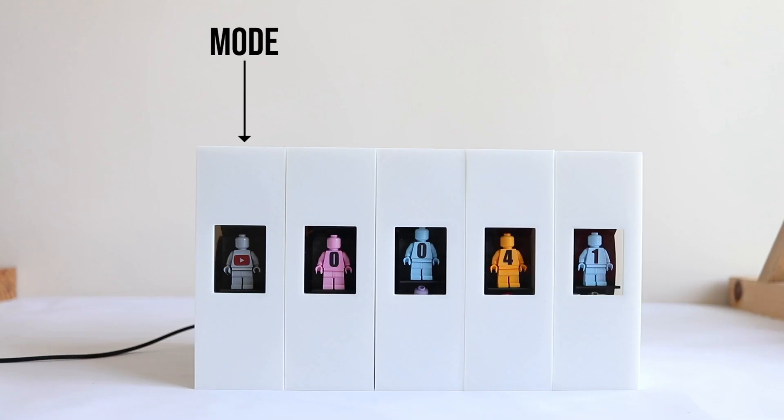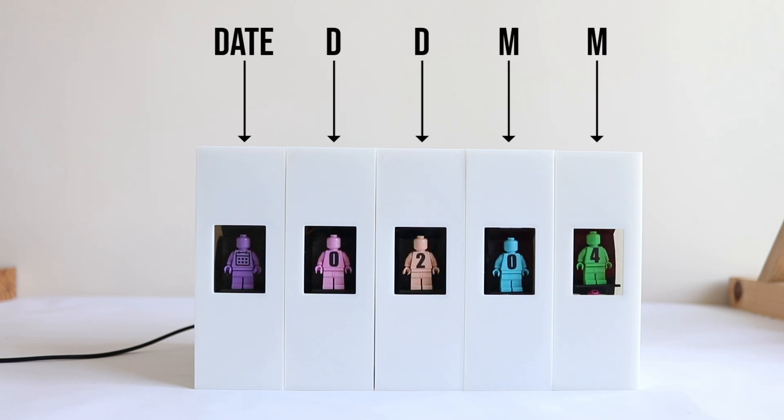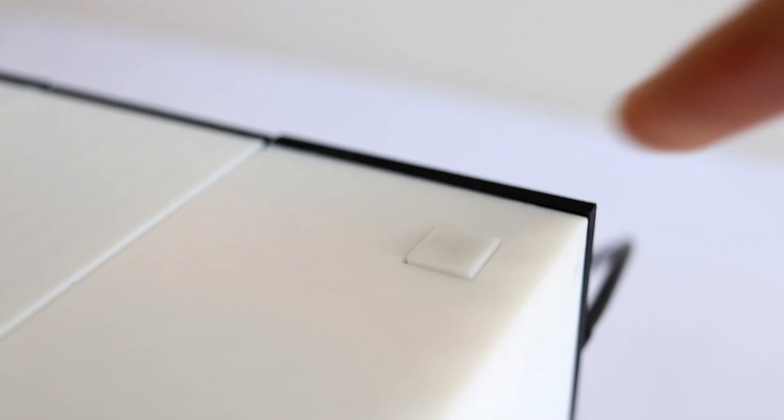The wheel furthest to the left shows the mode you're currently in. As well as a subscriber mode, there's a time mode in an hour hour minute minute format, and a date mode in a day day month month format. You just press this button to select which mode to display.